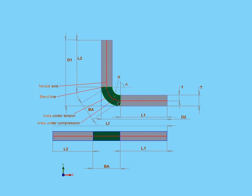As engineers, if we don't compensate for this variation, the final product won't have accurate dimensions. This is more critical for parts where you've got to maintain a tighter allowance or precision.